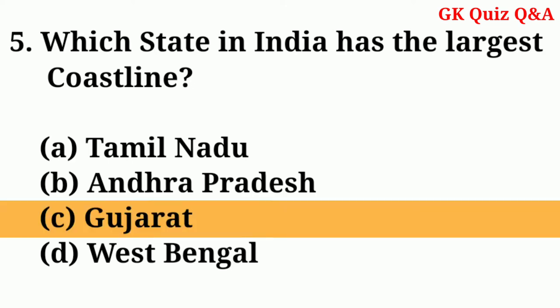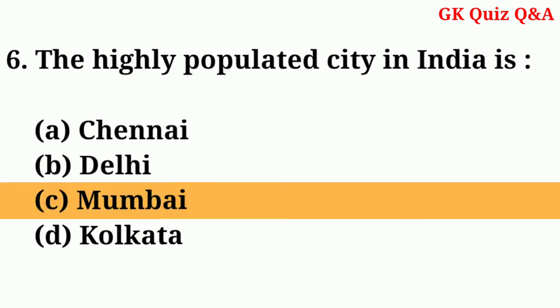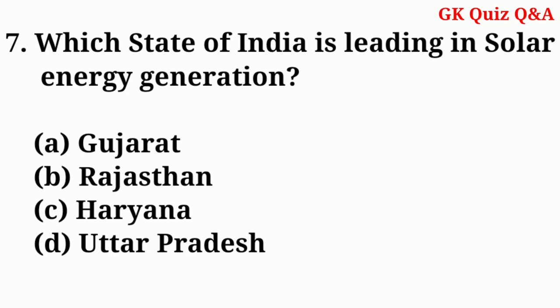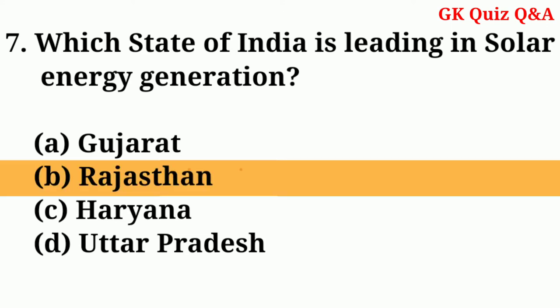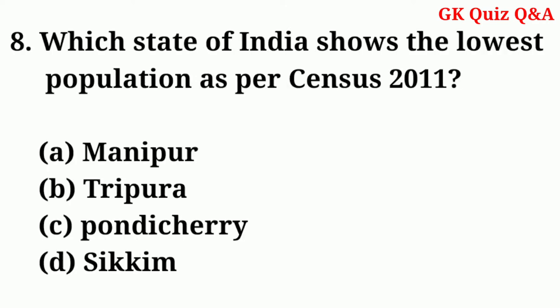Answer: Gujarat. The highest populated city in India is? Answer: Mumbai. Which state of India is leading in solar energy generation? Answer: Rajasthan. Which state of India shows the lowest population as per census 2011?